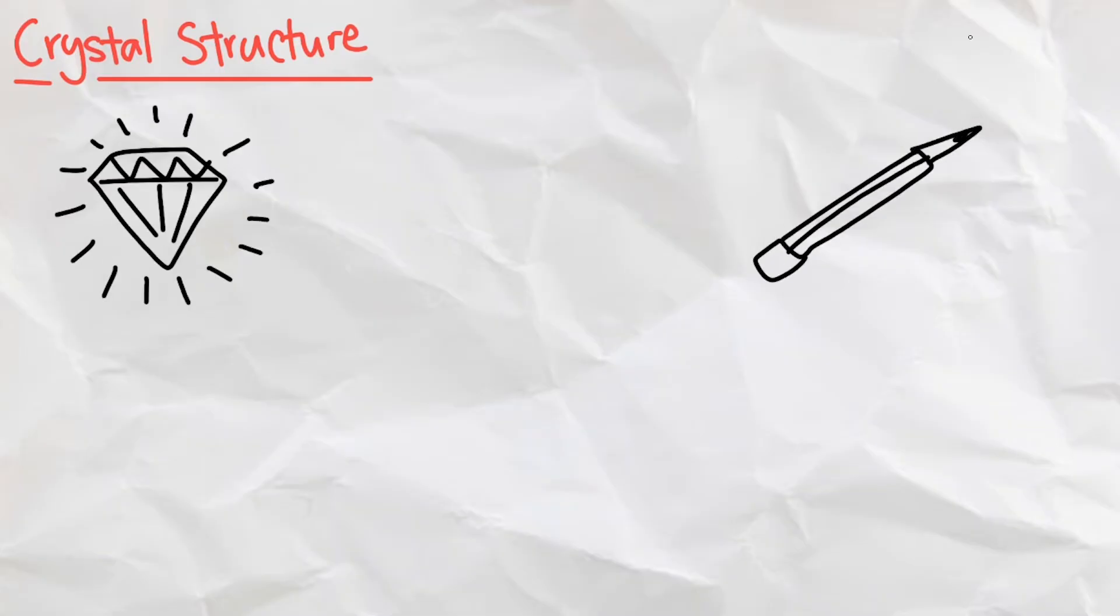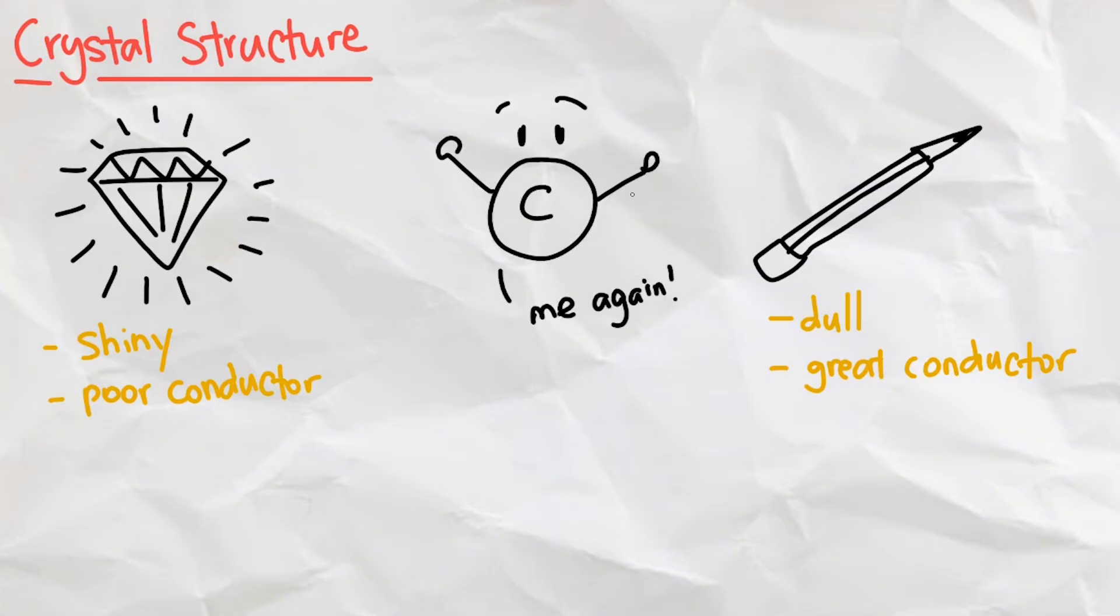The crystal structure actually matters a lot, as it can literally be the difference between a diamond and graphite. Both of those crystals are made of carbon, but one of them is shiny and poor conductor, while the other is dull but makes a great conductor. Their only difference is in the way the carbon is structured.